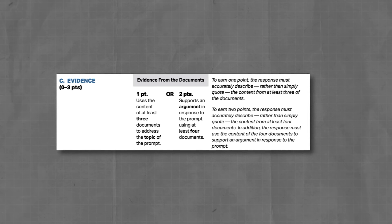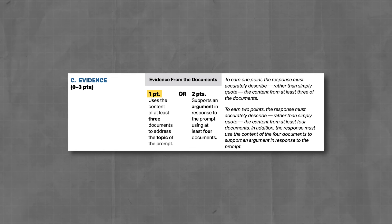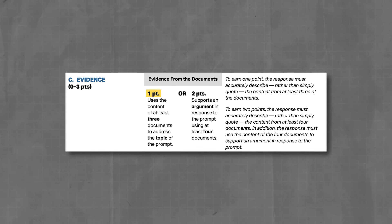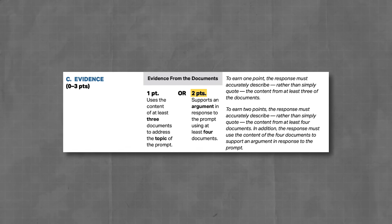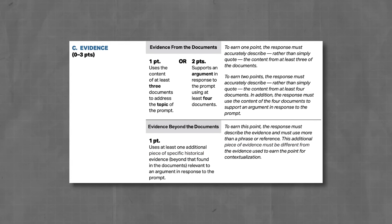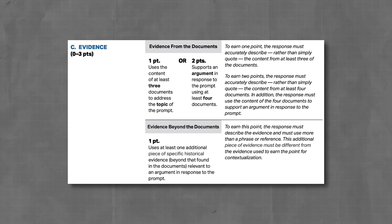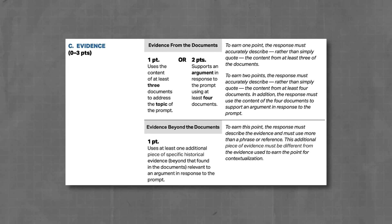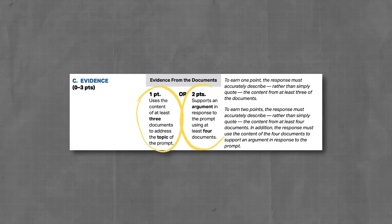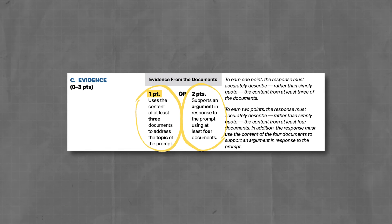Now we get to the evidence section. You're going to have seven documents to work with, and in this section you can get up to three points. One point is awarded for successfully describing the contents of three documents in relation to the prompt. Two points are awarded for supporting your argument with at least four documents. You can earn the remaining one point by writing about evidence related to your prompt which is not mentioned in the documents — this is called evidence beyond the documents. Describing documents gets you one point; supporting an argument with them gets you two.